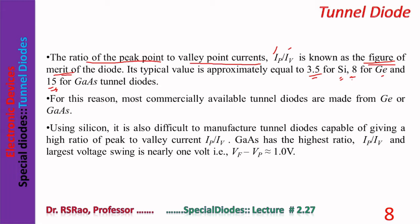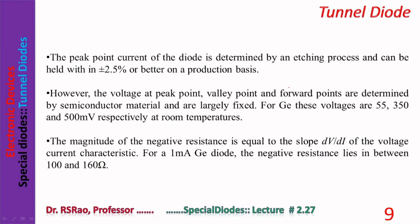Germanium is better than silicon for tunnel diodes. For this reason, most commercially available tunnel diodes are made either from germanium or gallium arsenide. Using silicon it is also difficult to manufacture tunnel diodes capable of giving a high ratio of peak to valley current. Gallium arsenide has the highest ratio Ip/Iv and the largest voltage swing, nearly equal to 1 volt.